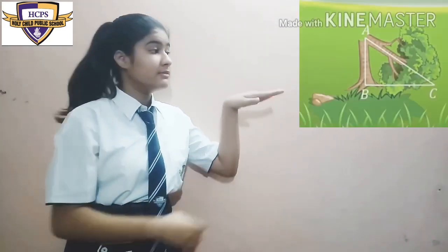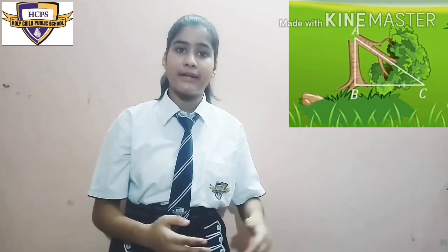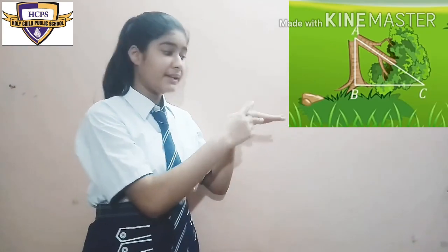Now let us take another example to clarify further. The upper part of a tree is broken by the wind and its top touches the ground, making a right triangle like this. In this way, we can take so many examples from our day-to-day life of trigonometry.